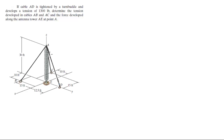We have this tension of 1300 pounds, we also have a tension going into this BAC cable right there, and then we have a force developed in the antenna going up towards A. So those are our four forces and we already got one. Basically what you're going to do is find the unit vector for all of these forces, and then the problem becomes much easier to solve. To find the unit vectors we need to find all the points involved: A, B, C, D, and E.